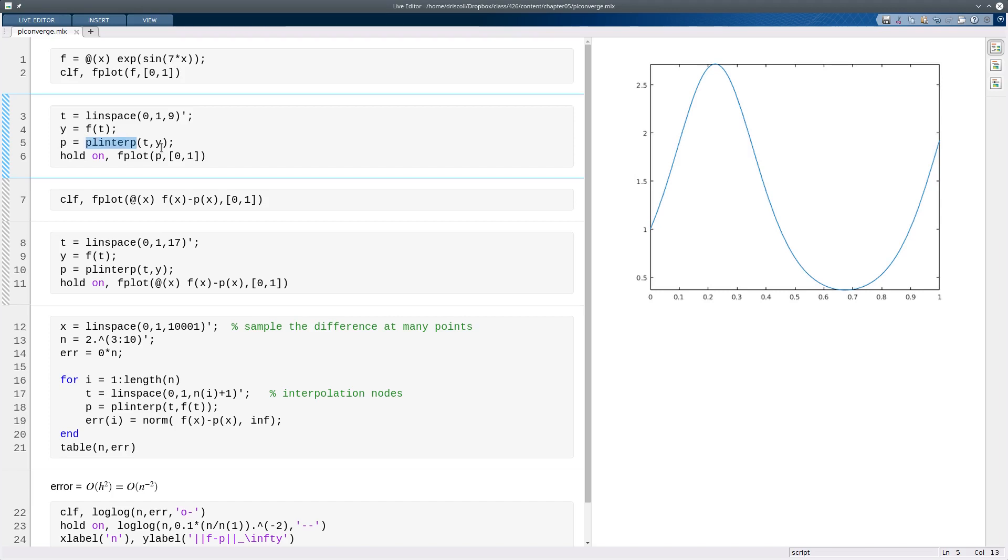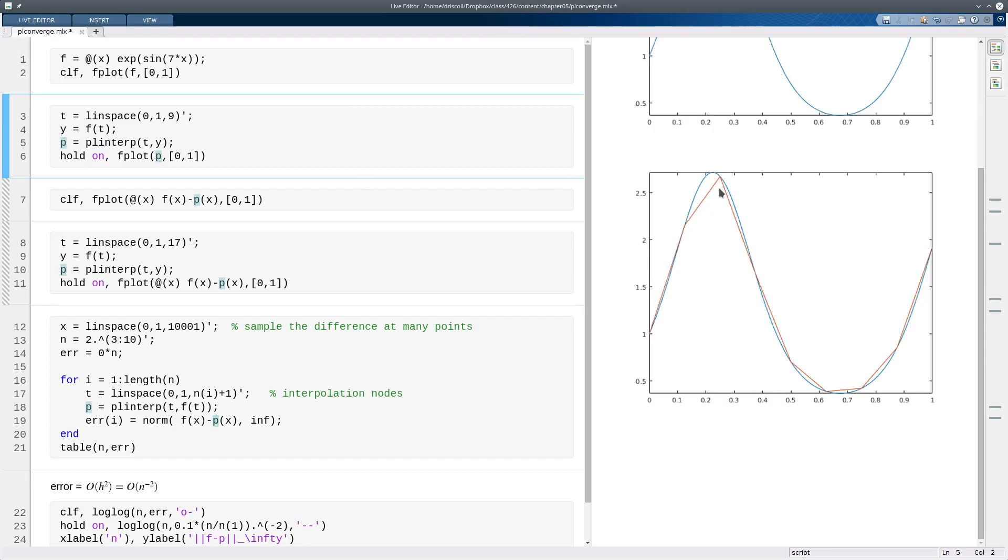Plnterp is the function from the book that creates the piecewise linear interpolant. So the output of that is a function. So now p is a function like any other, a function of x. And we can add that to our plot and so you can see how you get the piecewise linear interpolant at those points.